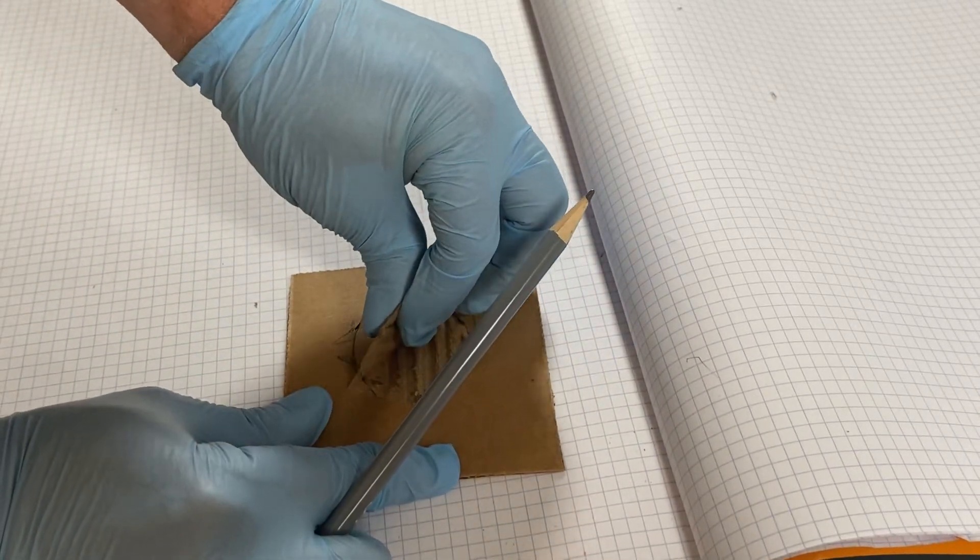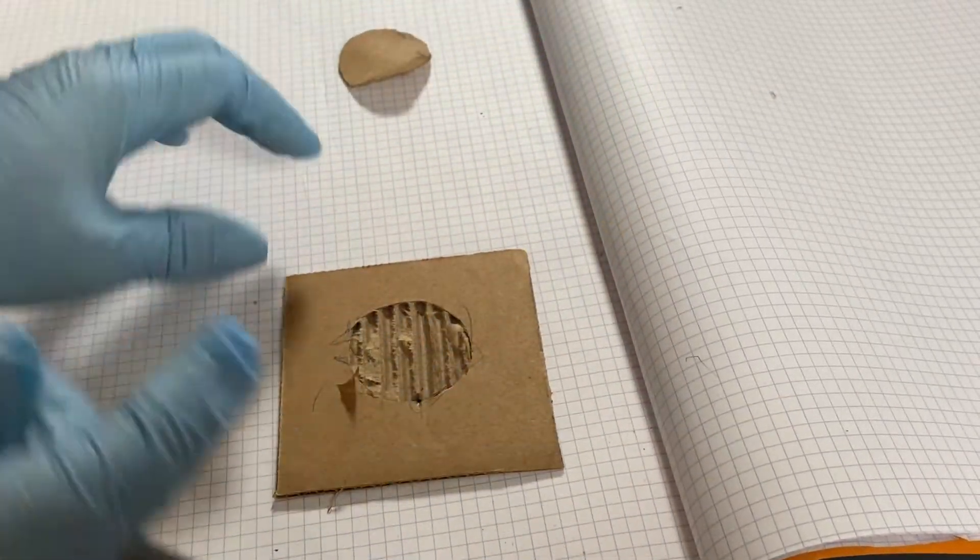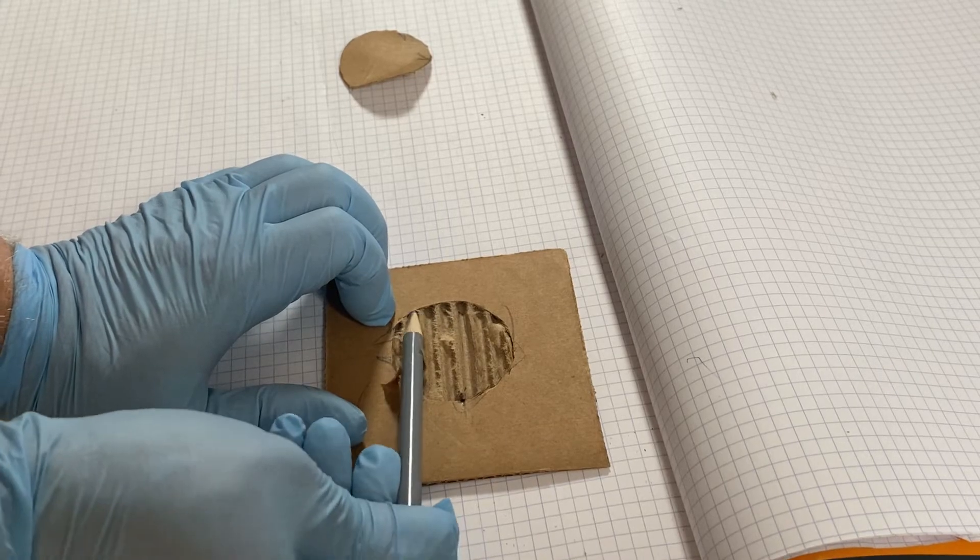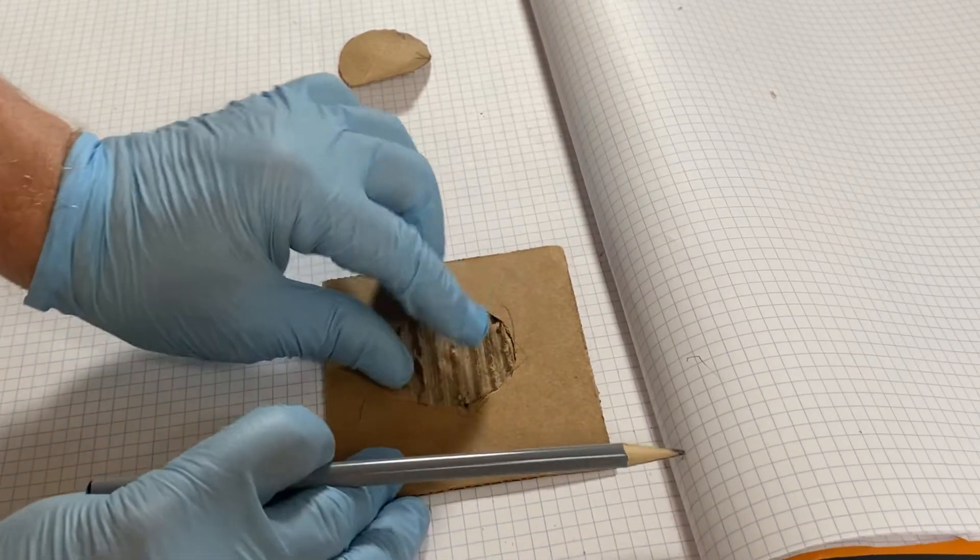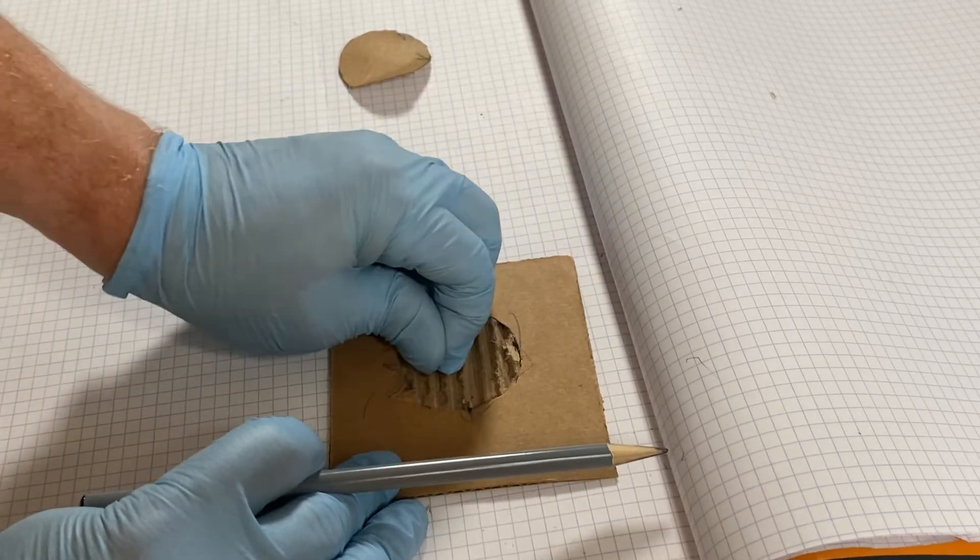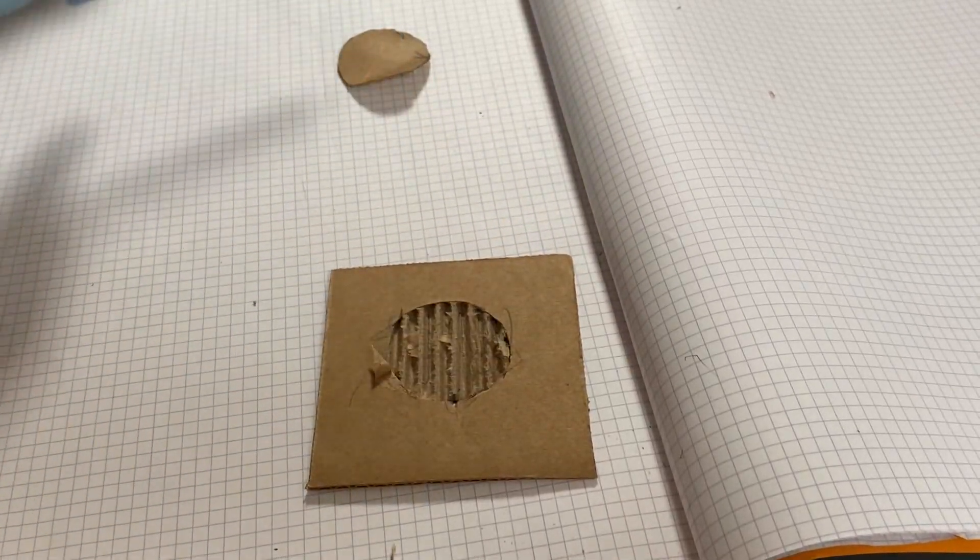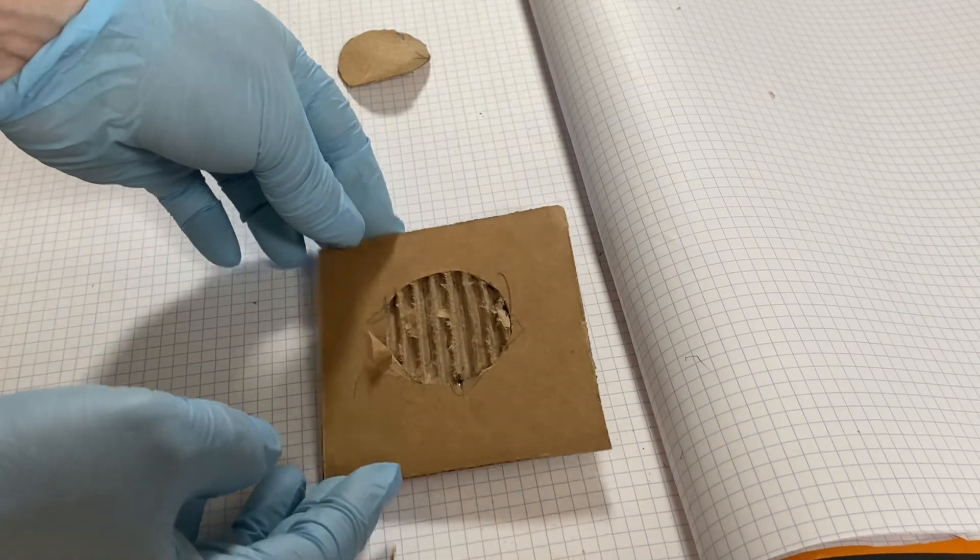Once you get it going, you can peel the top off. You can still use that dull end of the pencil to kind of clear out those little pieces. And there you have it. You have exposed corrugation right there.